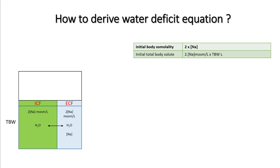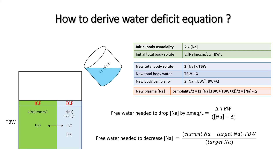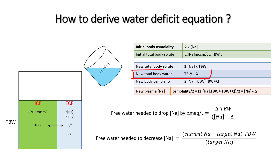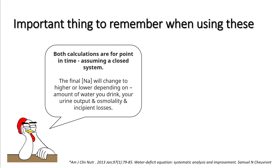To derive the water deficit equation: if you add X liters of D5W (free water) and sodium changes by delta, your total body solute remains the same — that is 2 × sodium × total body water. Your new total body water is total body water + X. Dividing gives new body osmolality, which equals your desired change in sodium. Solving for X, free water needed to decrease sodium = (difference in sodium levels × total body water) ÷ target sodium.